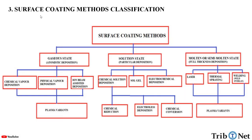Now, let us understand the classification of surface coating methods. The surface coating methods are basically classified into three states: the gaseous state, solution state, and molten or semi-molten state. Under the gaseous state, also called atomistic deposition, it can be classified into chemical vapor deposition, physical vapor deposition, and ion beam associated deposition — all of which can be done under plasma variance. In the solution state, or particulate deposition, we have chemical solution deposition, sol-gel deposition, and electrochemical deposition. Chemical solution deposition is further divided into chemical reduction, electrolysis, and chemical conversion. In the molten or semi-molten state, which is full thickness deposition, it is divided into laser, thermal spraying, welding, or weld overlay, which can also be done under plasma variance.